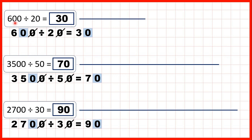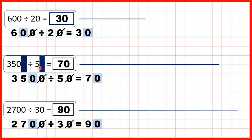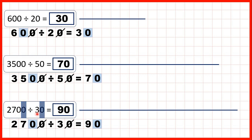So 600 divided by 20 gives us the same answer as 60 divided by 2. Instead of working out 3,500 divided by 50, we know that gives the same answer as 350 divided by 5. And if we have one end zero in the divisor, we can cancel an end zero — so for that last question, just work out 270 divided by 3.